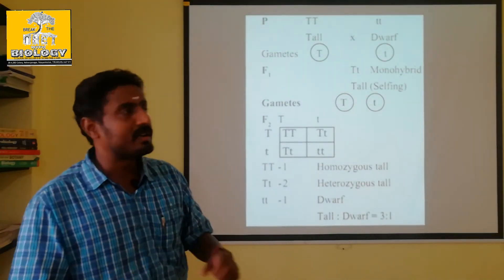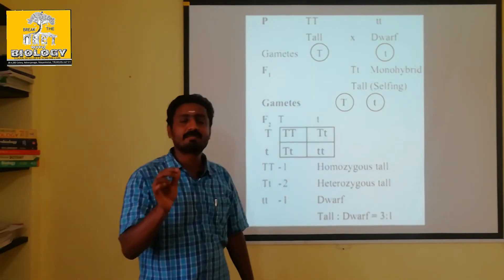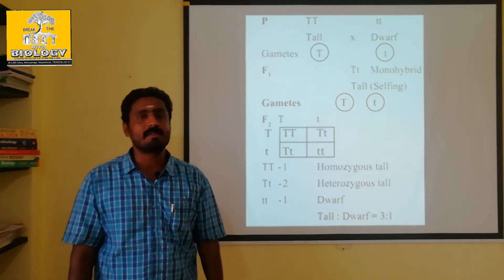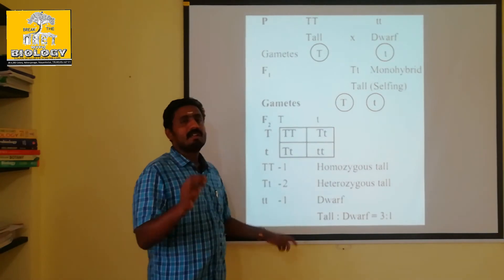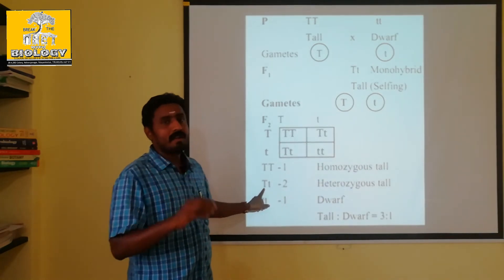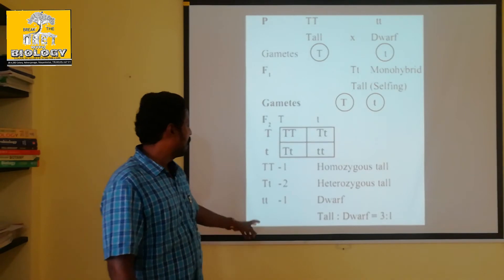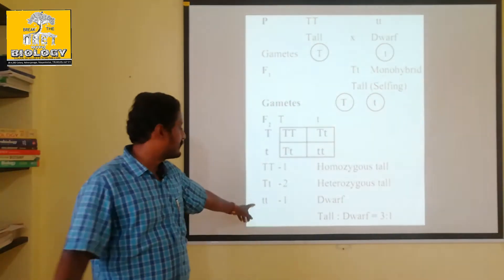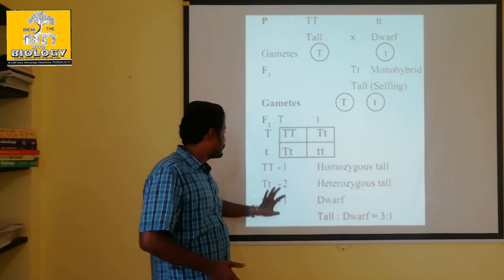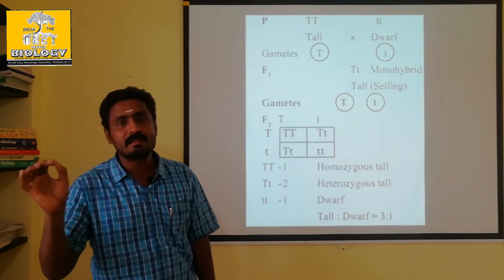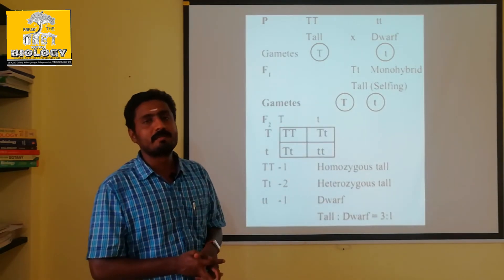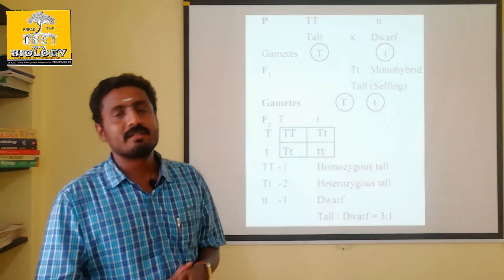You learn how many people can have capital T and how many people can have small t. That is the genotype ratio. In the genotype ratio, 25 plants are TT, 50 plants are Tt, and 25 plants are tt. The genotype ratio is 1:2:1. In the phenotype ratio, the ratio is 3:1.